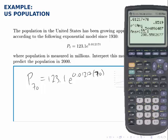Therefore, this model predicts that in the year 2000 the US population would be about 288 and a half million people.